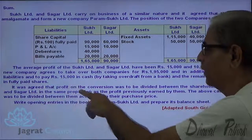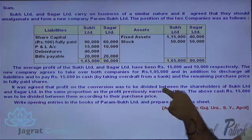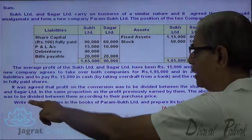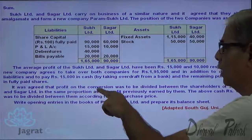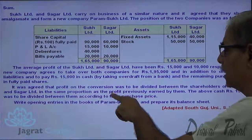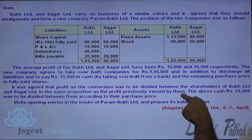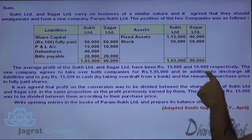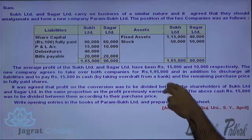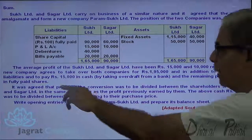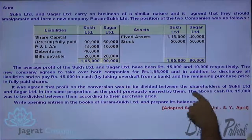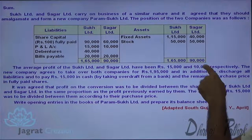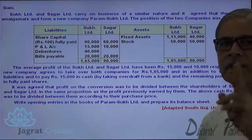It was agreed that the profit on conversion was to be divided between the shareholders of Souk Limited and Sagar Limited in proportion to the profits previously earned by them — Rs. 15,000 and Rs. 10,000 — giving a ratio of 3:2.